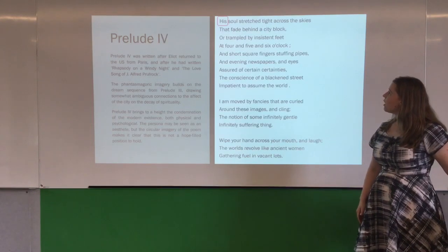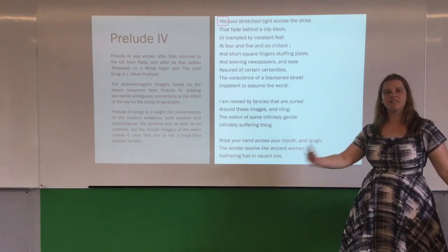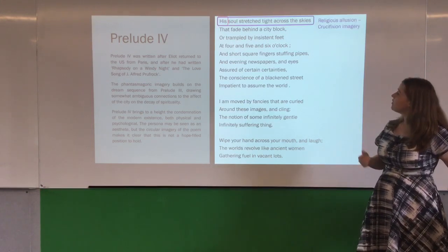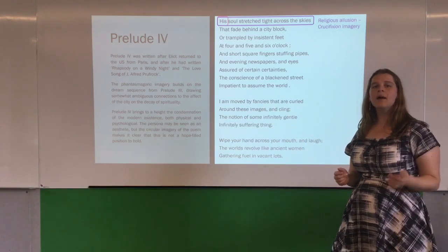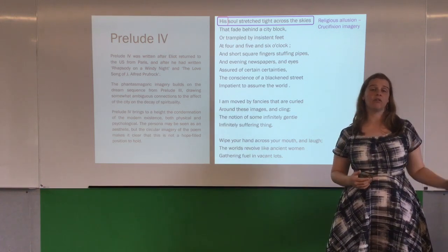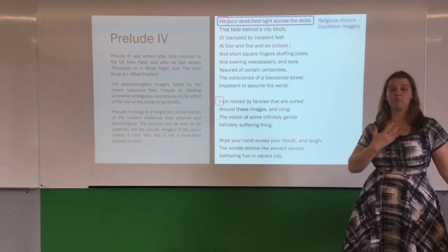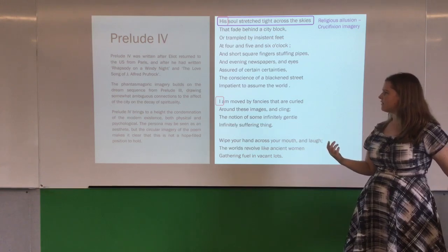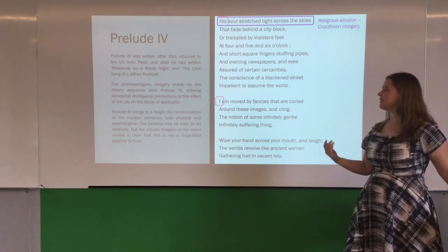Prelude 4 ends the poem and it was written much later, so we can see T.S. Eliot extending himself again here. We start with his soul — the third person. This might be a religious allusion to Christ stretched out across the sky. Many people also see it as a connection to the images that flicker across the ceiling. We then move into the first person — this is perhaps the most personal element of the poem: 'I am moved by fancies.' And it's here we get the idea that the persona is an aesthete who cares about the aesthetic world.